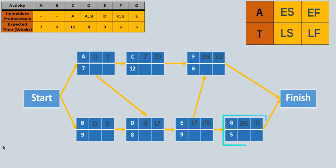Note that although G is the last letter, it does not have the highest earliest finish, because F has 32. So the project's completion time is 32 weeks. The project's completion time is the highest of the earliest finish times of the finish node.